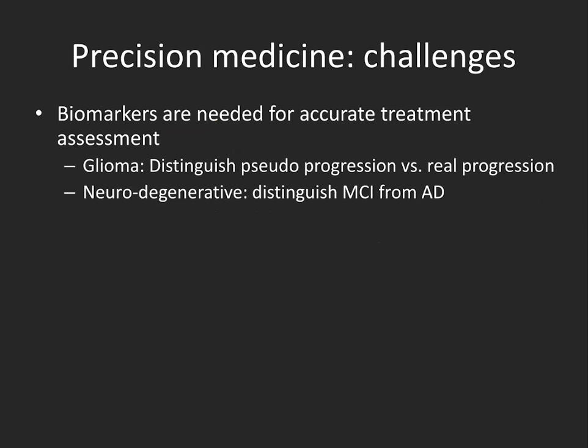But still, a lot of work needs to be done. Biomarkers are still needed in many different areas within oncology and also outside of oncology for a better assessment of treatment. For example, in glioma, to distinguish pseudo-progression versus real progression. In neurodegenerative diseases, to distinguish mild cognitive impairment from Alzheimer's disease.